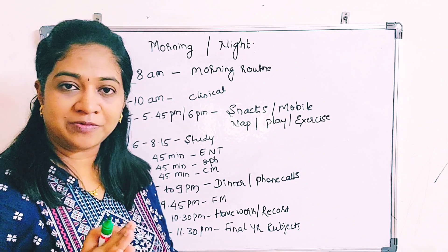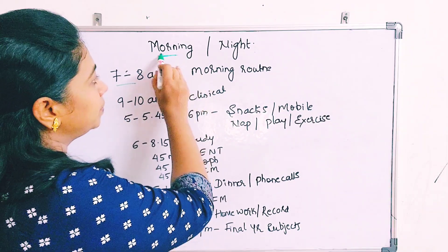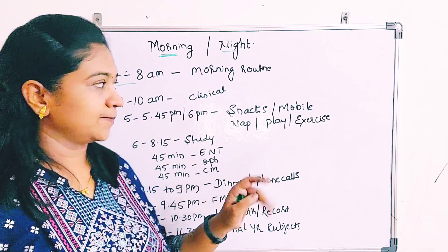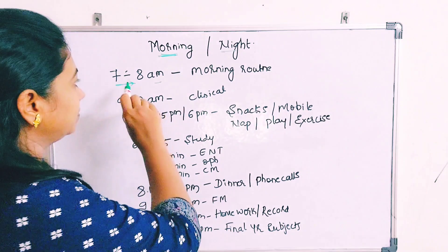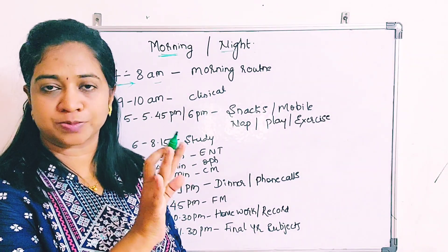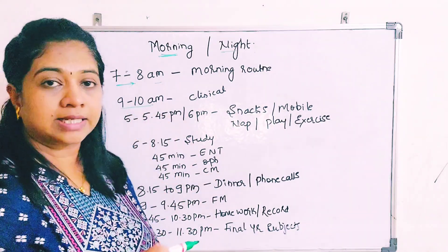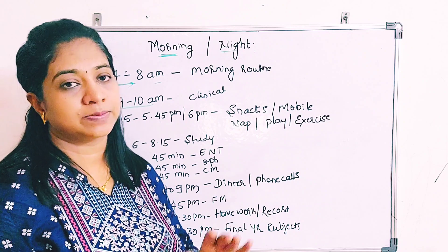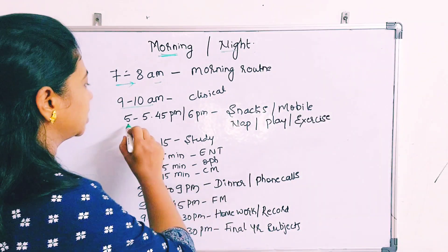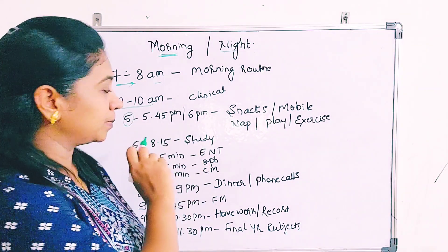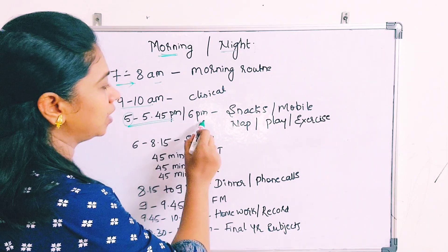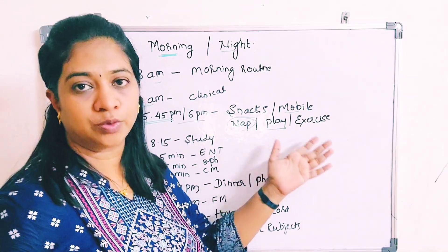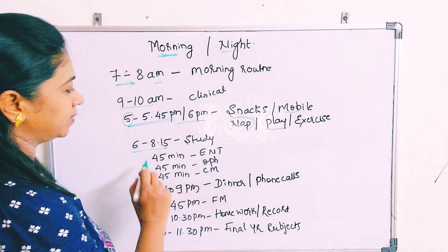The timetable for a third year student who prefers to study at night: get up by 7 o'clock; between 7 to 8 AM, complete your morning routine, have breakfast properly, and come to class. From 9 to 10 in clinical postings, utilize 30 minutes to one hour to study theory aspects of practical cases. Once college ends by 5 PM, between 5 to 5:45 or 6 PM, have snacks, see your mobile, have a nap, play, or do some exercise.